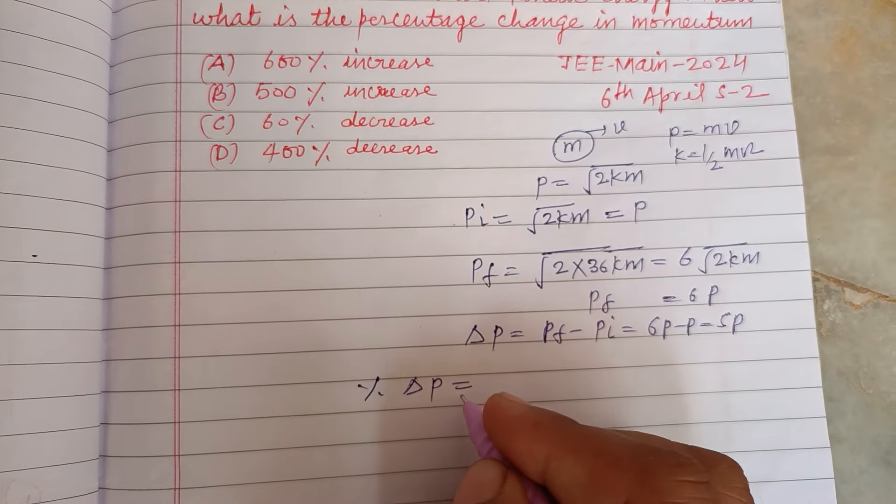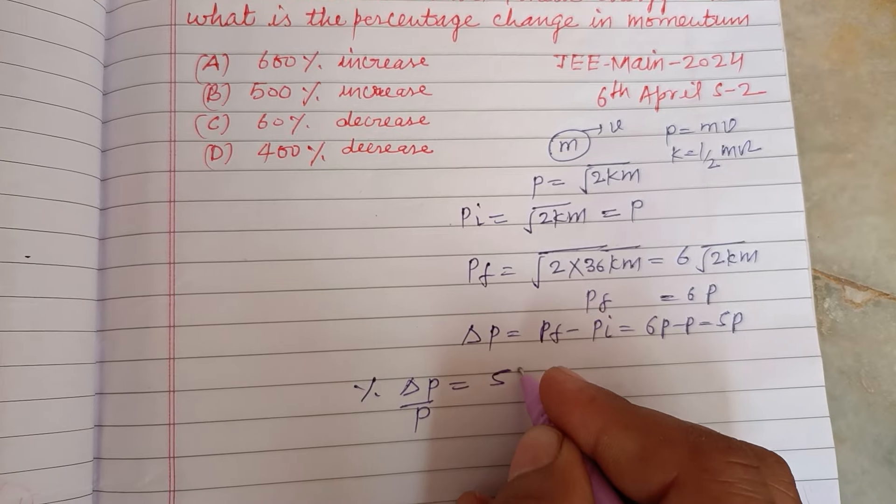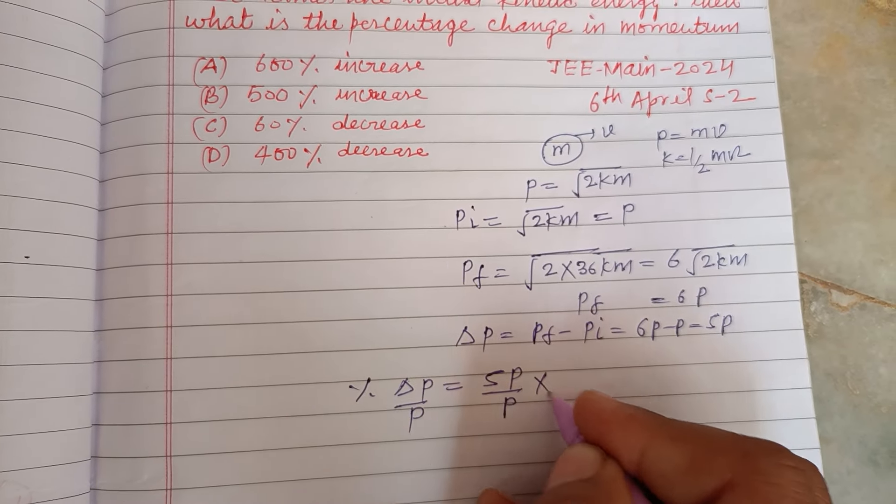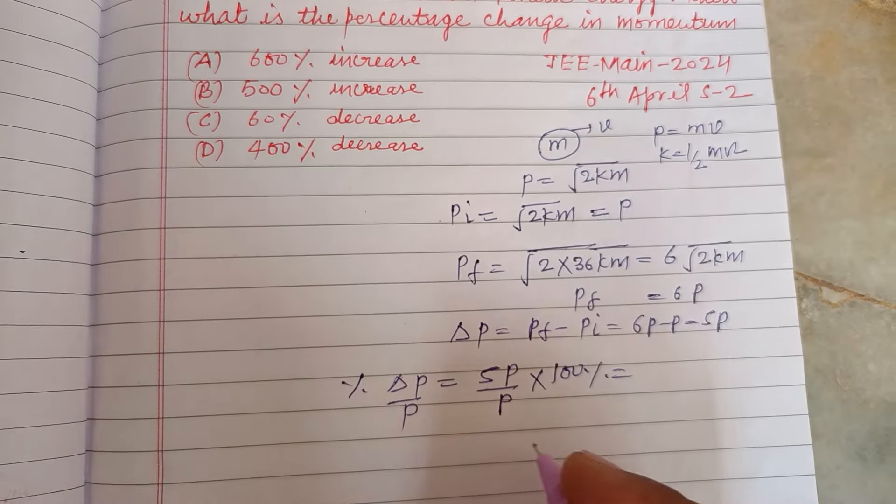will be equal to delta P upon P equals 5P upon P times 100%. So this is